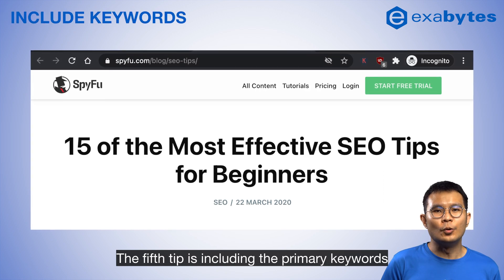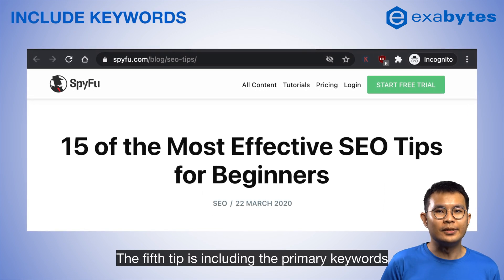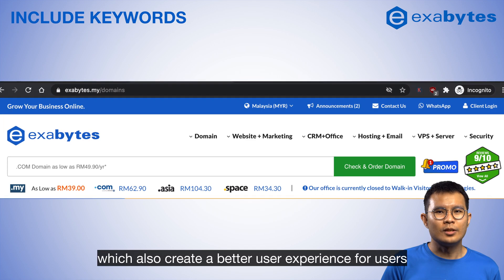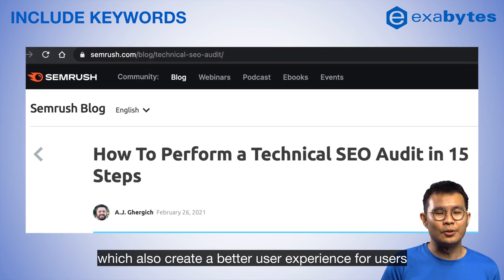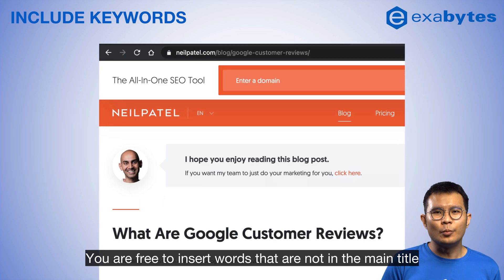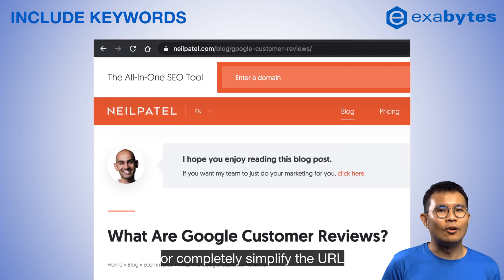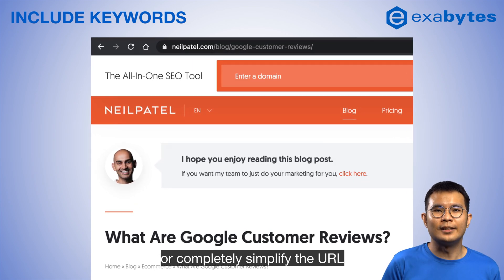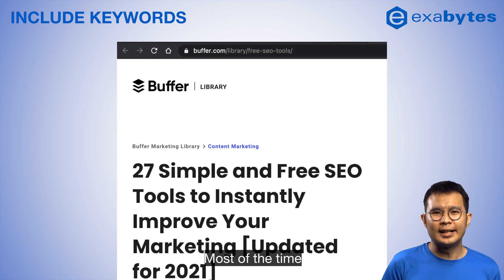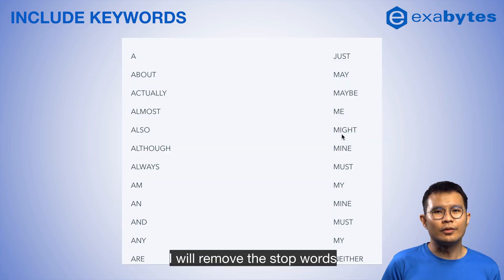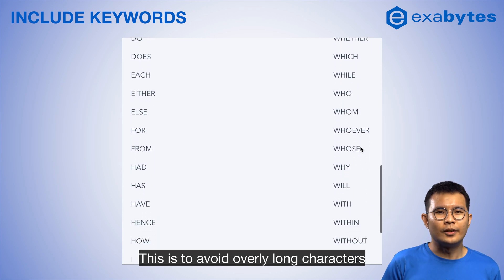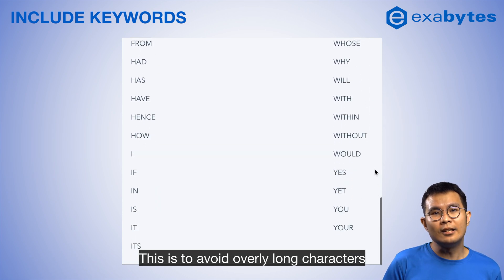The fifth tip is to include the primary keywords. Most titles naturally contain keywords, which also creates a better user experience. You are free to insert words that are not in the main title, or completely simplify the URLs to retain only the important keywords. Most of the time, I will remove stop words that are fine to ignore in URLs, to avoid overly long characters.